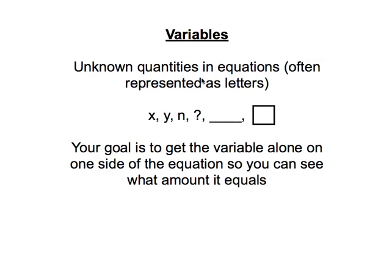Often it's represented as a letter, so you might see x, y, or n. Sometimes it'll be a question mark, a blank line, or even an empty square. Your goal is to get the variable all by itself and alone on one side of the equation so you can see what amount it equals on the other side.